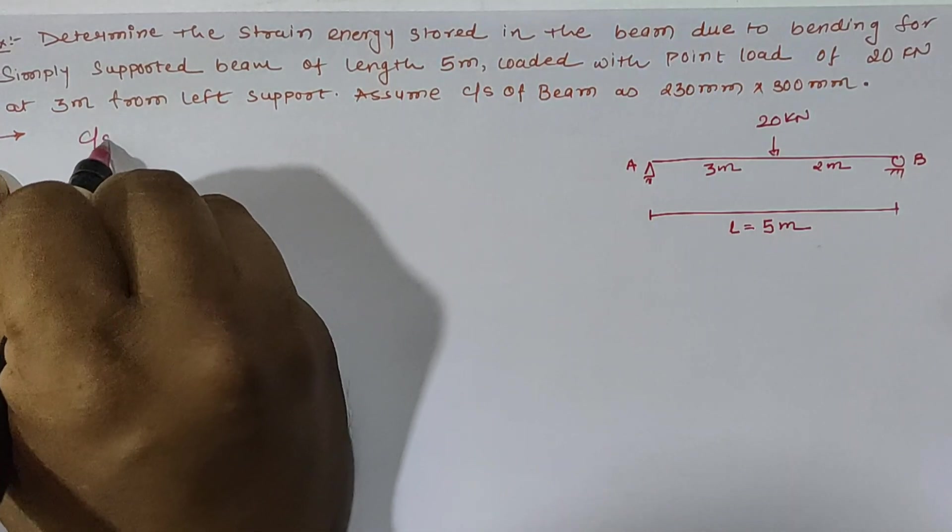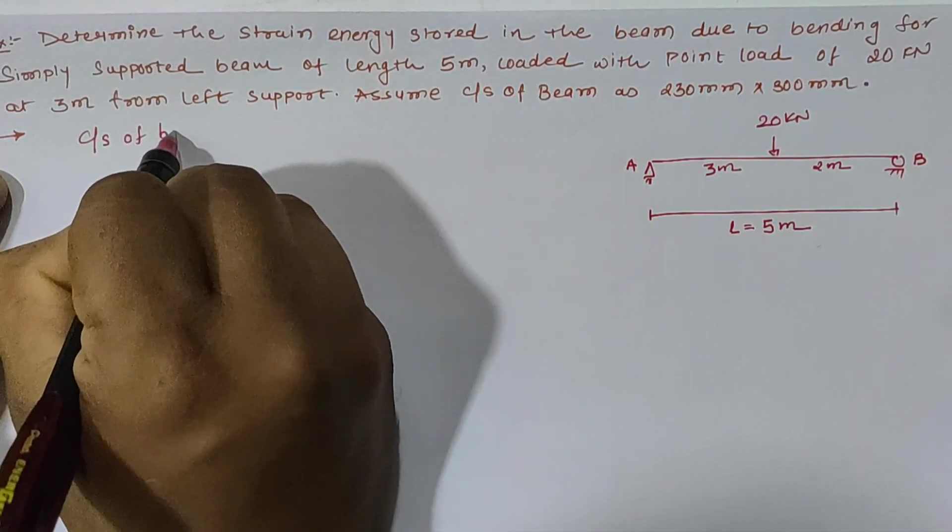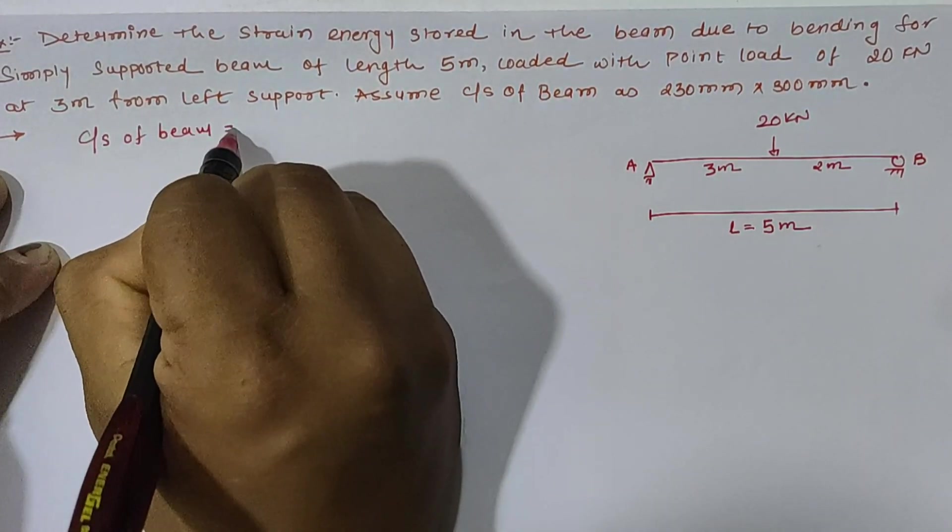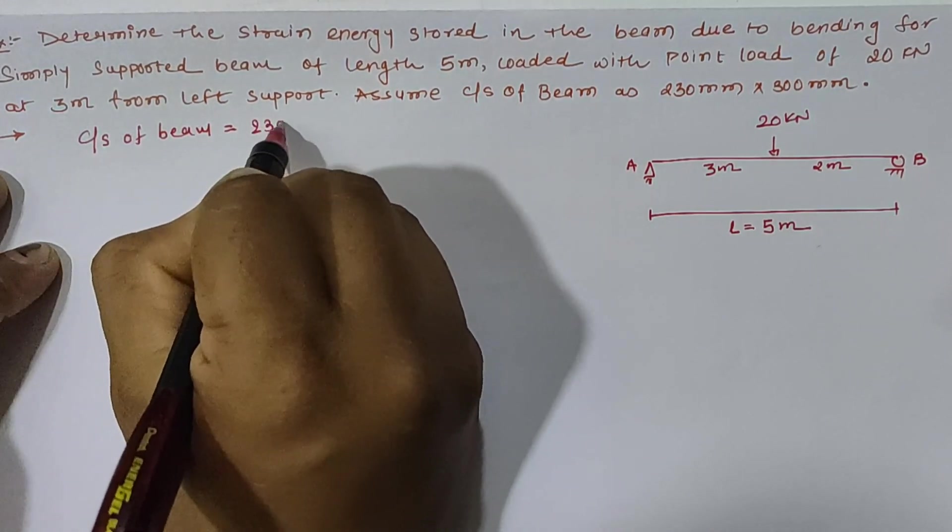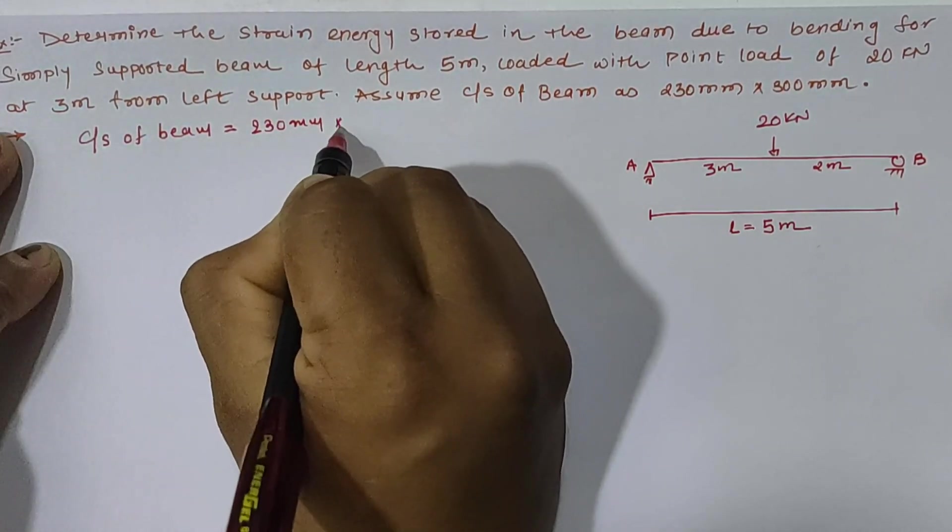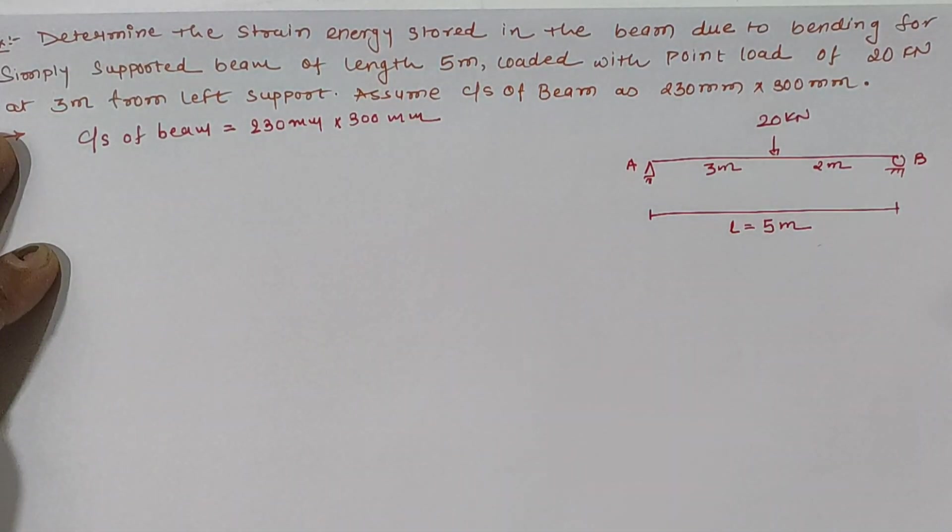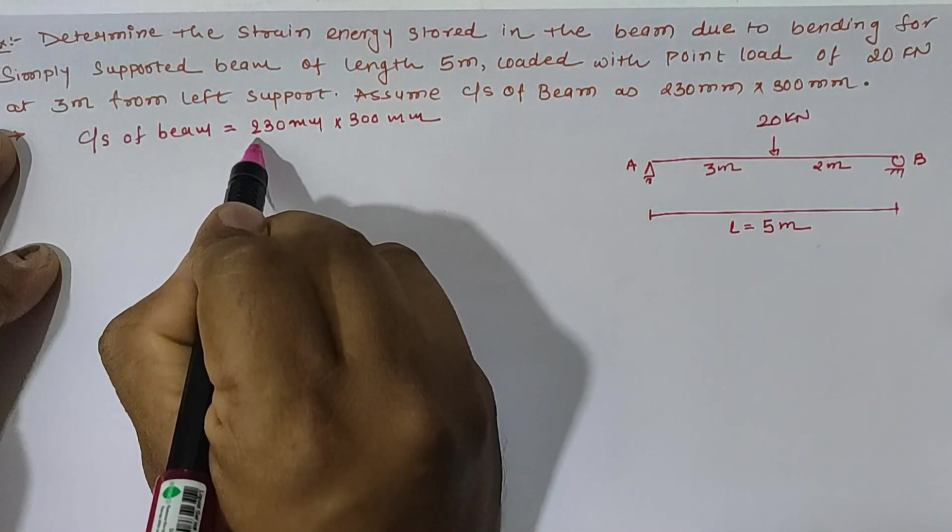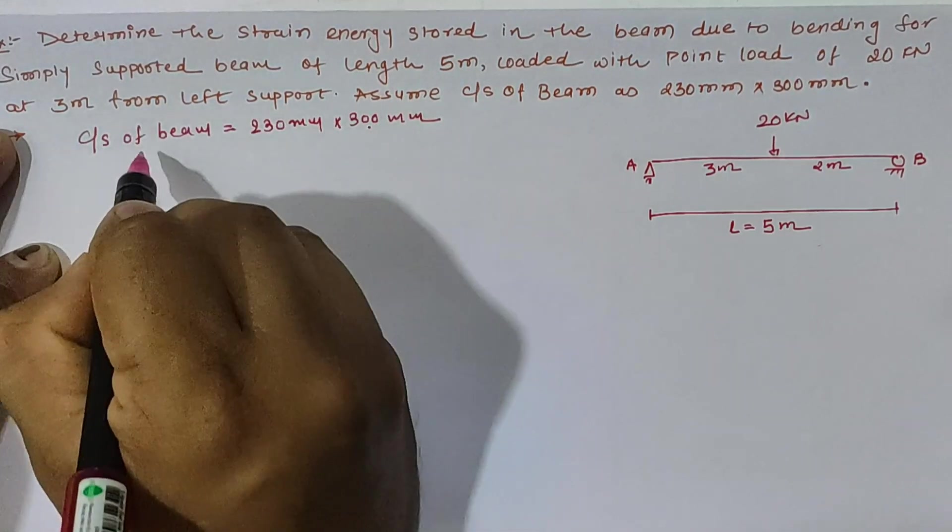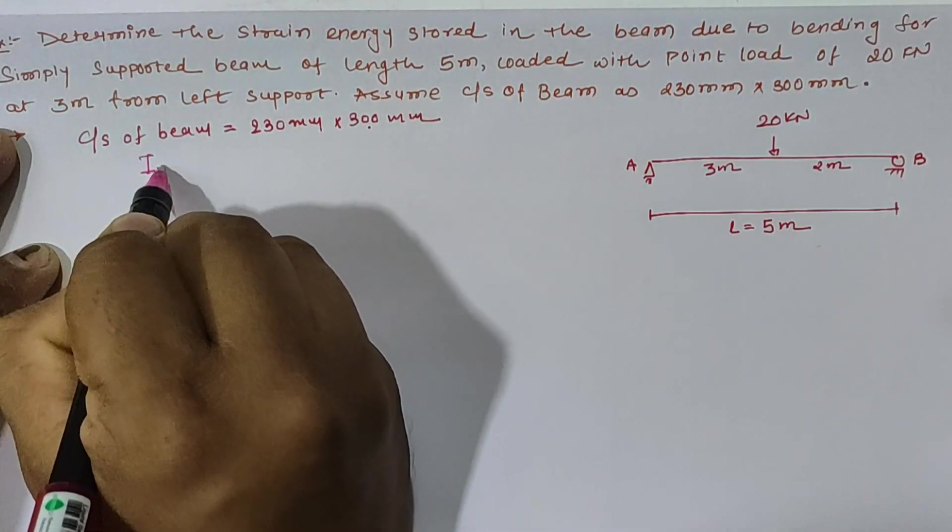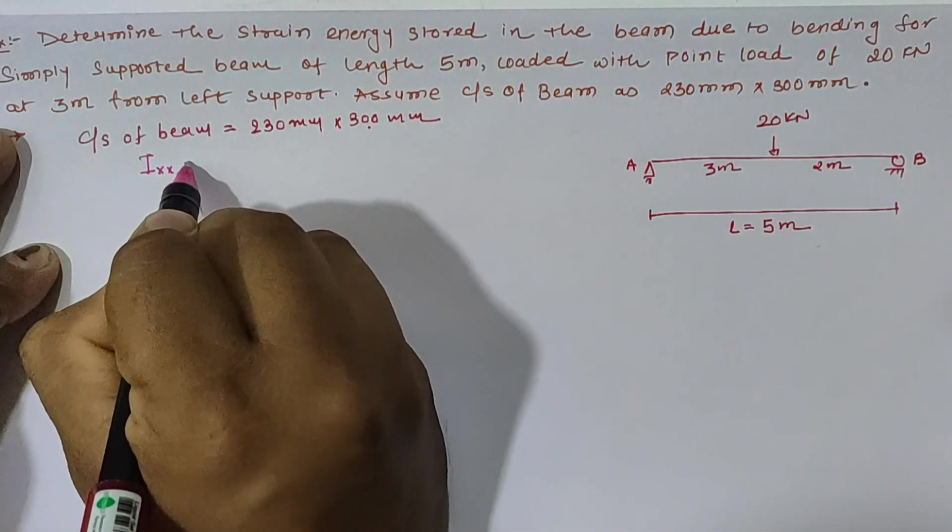So cross section of beam is given as 230 x 300 mm and we have to calculate strain energy due to the bending. So let us focus on the given data. First of all, we have given 230 mm x 300 mm and moment of inertia with respect to xx axis.